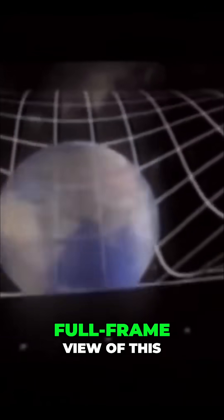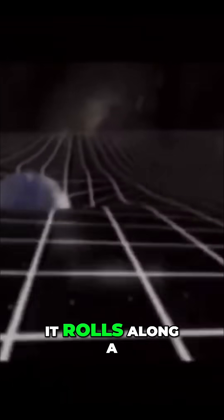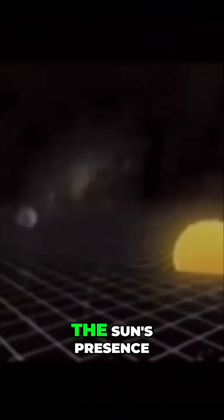If we go to a full-frame view of this, the Earth itself is kept in orbit because it rolls along a valley in the environment that's curved because of the sun's presence.